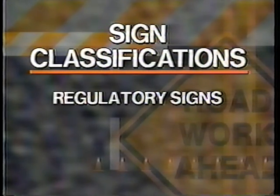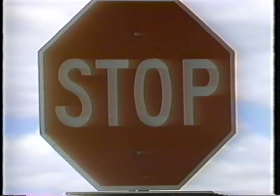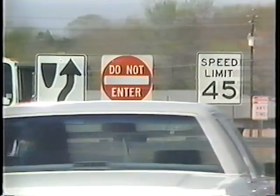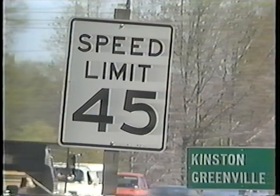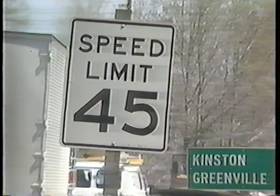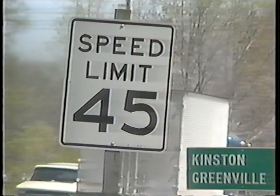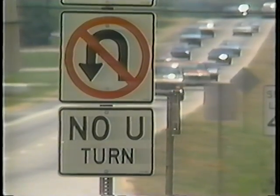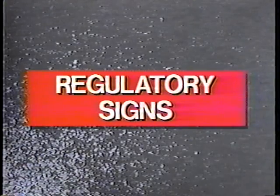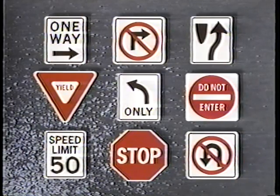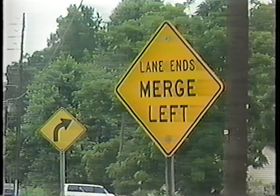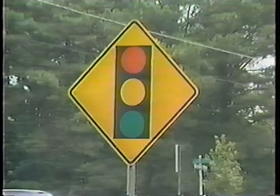Signs are classified as regulatory, warning, and guide signs. Regulatory signs impose legal restrictions and may be used only with permission from the authority having jurisdiction over the roadway. They are typically rectangular with the long dimension vertical, using black lettering on a white background. A red circle with a diagonal slash may indicate a prohibitive maneuver. Red is the predominant color for stop, yield, do not enter, and wrong way signs, whose unique shapes increase attention-getting value.